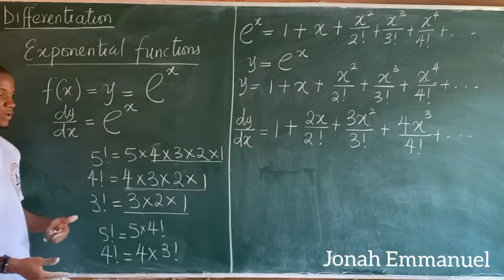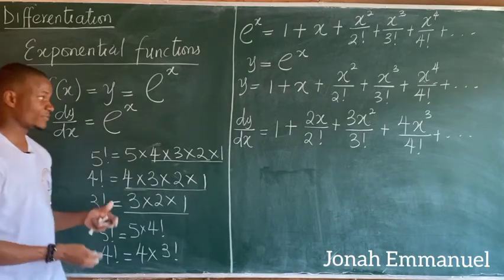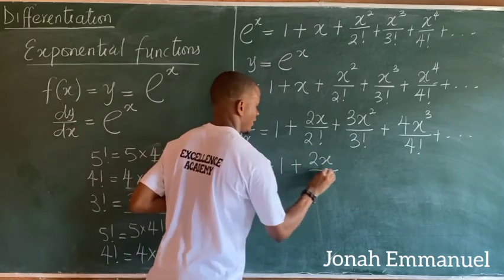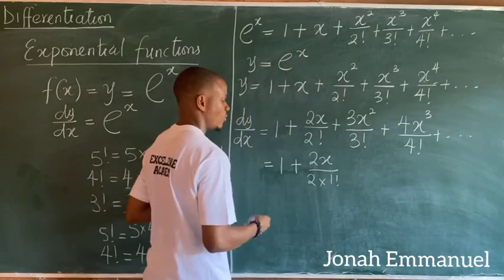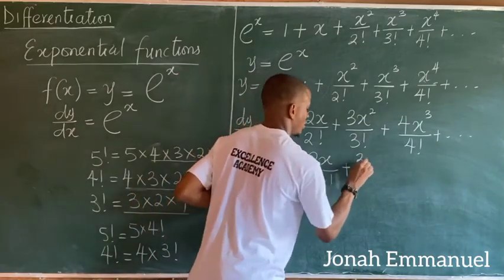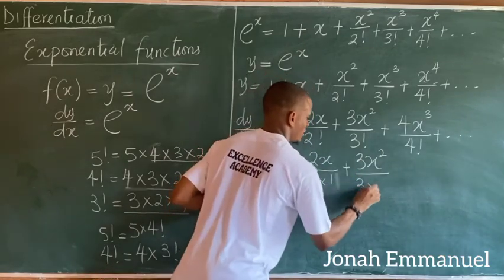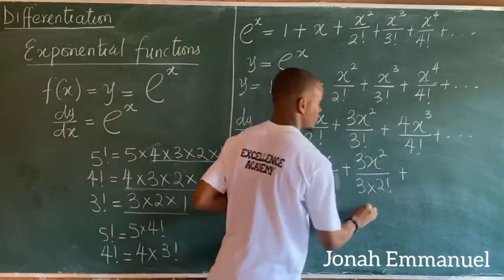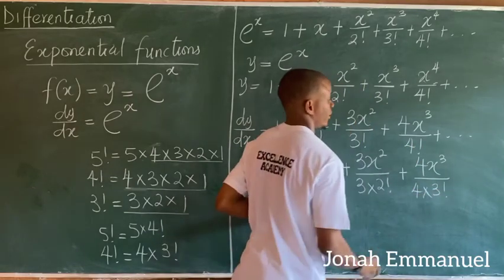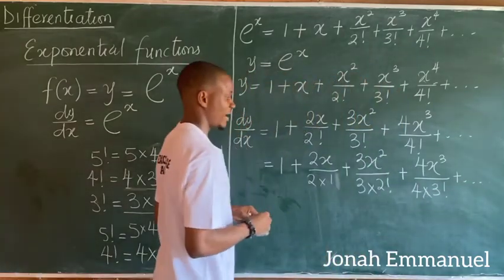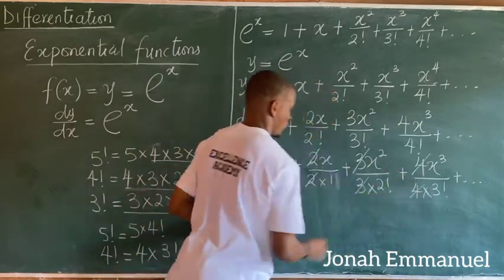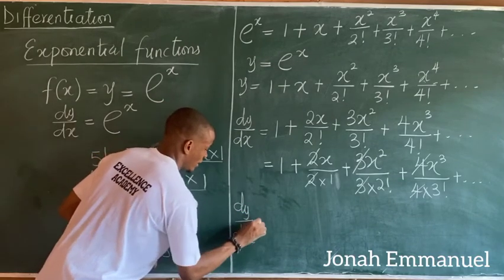So 2 factorial becomes 2 times 1 factorial, which is 1. Working through our differentiated series: 2x over 2 factorial becomes 2x over (2 × 1 factorial); 3x² over 3 factorial becomes 3x² over (3 × 2 factorial); 4x³ over 4 factorial becomes 4x³ over (4 × 3 factorial). We can see that 2 cancels 2, 3 cancels 3, and 4 cancels 4.